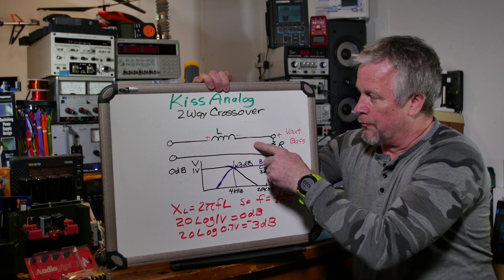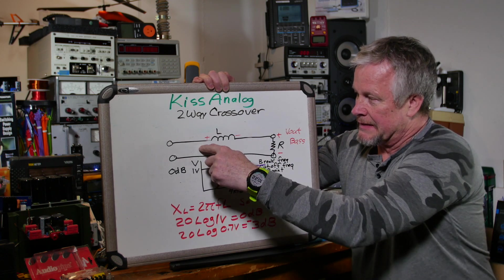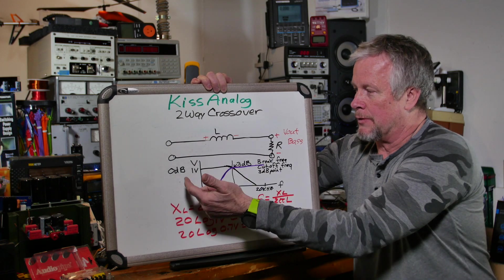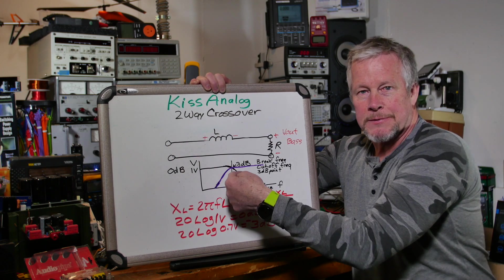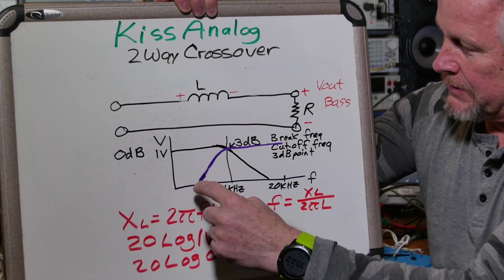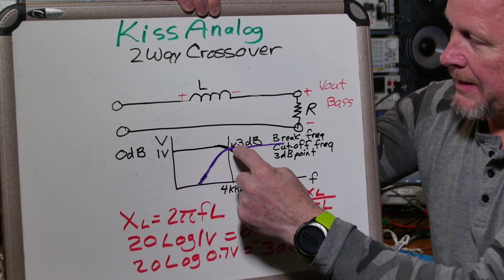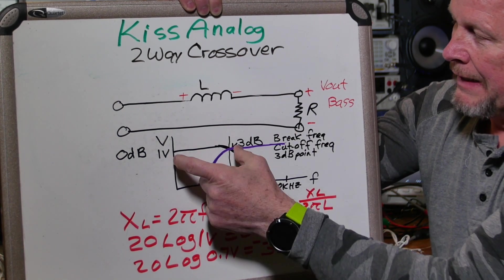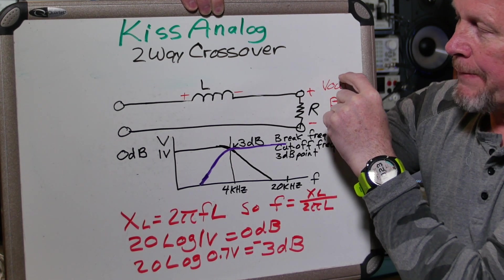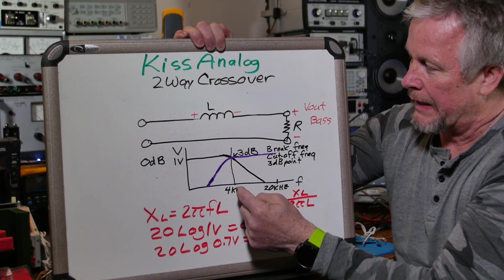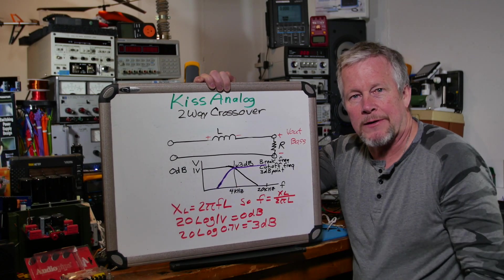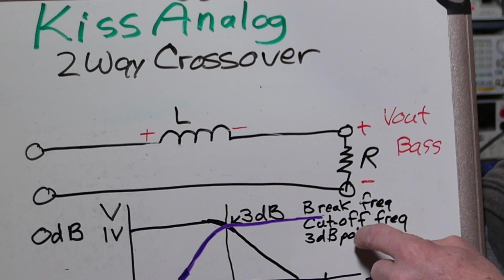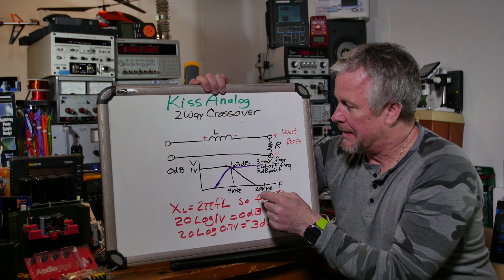The inductor is going to allow low frequencies to pass through to the woofer, and the high frequencies it won't allow — so they'll have to go to the tweeter. That's the idea of the crossover: it crosses over. Low frequencies go to the woofer, high frequencies go to the tweeter. On this graph I'm showing voltage versus frequency. The low frequencies are this black curve. Ideally, 4k would be our cutoff — so from 0 to 4k goes to the woofer, and 4k and above goes to the tweeter. That cutoff is also known as the break frequency, or the 3dB point.